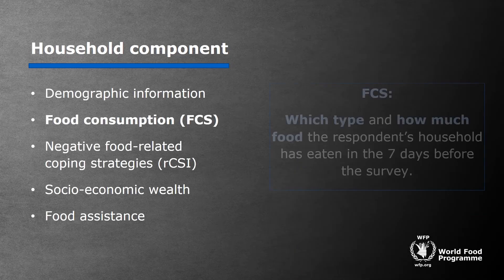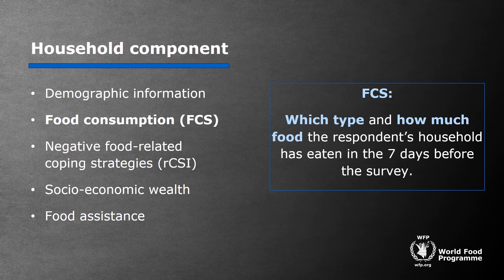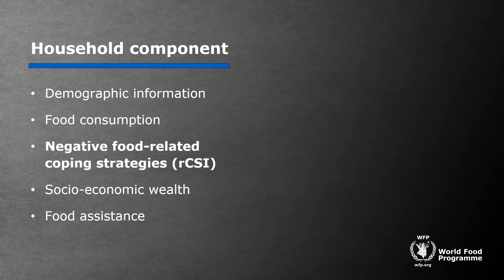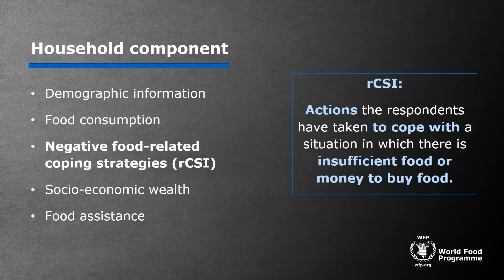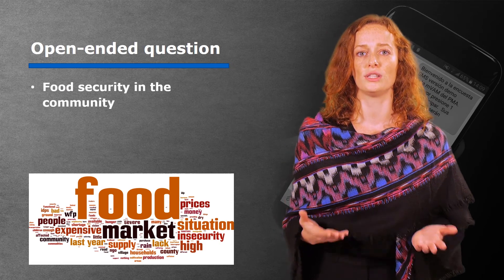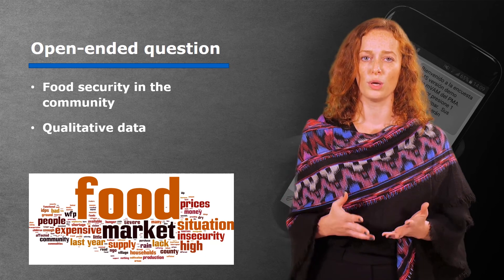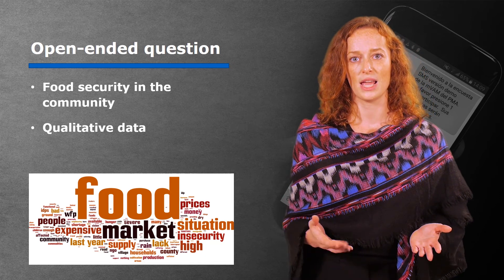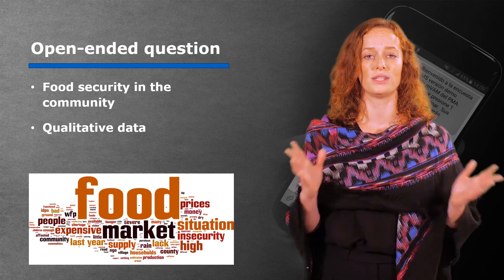The food consumption score tells WFP about which types and how much food the respondent's household has eaten during the seven days before the survey. The Reduced Coping Strategies Index tells WFP about the actions respondents have taken in order to cope with the situation in which there is either insufficient food or money to purchase food. Finally, respondents are usually asked an open-ended question on the food security situation in their community. This qualitative data is analyzed and we calculate the frequency of words used in the answers. This shows us which topics are most frequently mentioned and the results are then visually represented in a word cloud.